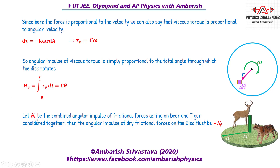Let HF be the angular impulse of friction. When the tiger and deer are running, they experience dry friction under their feet from the disc. So there is a dry friction impulse acting on the tiger and the deer — I call that combined dry friction angular impulse HF. The reaction of that impulse acts on the disc. So whatever is the angular impulse in the tiger-plus-deer system, the negative of that is the angular impulse on the disc. The angular impulse of the dry friction forces on the disc must be minus HF.